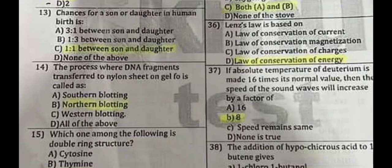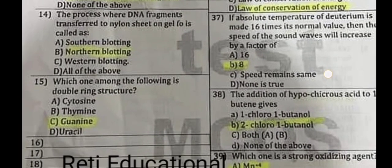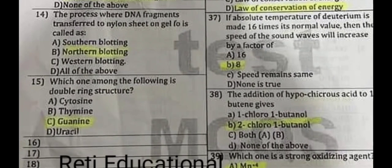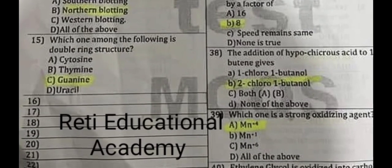Question number 37: If the absolute temperature of deuterium is made 16 times its normal value, then the speed of sound waves will increase by a factor of 8. Question number 38: The addition of hypochlorous acid to 1-butene gives B: 2-chloro-1-butanol. Question number 39: Which one is a strong oxidizing agent?